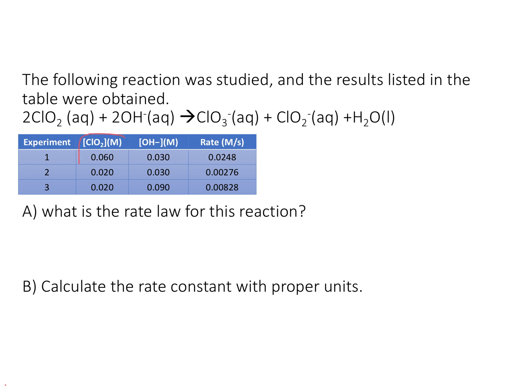To find the rate with respect to chlorine dioxide, I want to use experiments 1 and 2, because the hydroxide concentration stays the same. Then to find the rate with respect to hydroxide, I want to use experiments 3 and 4, because in those experiments the hydroxide concentration changes and the chlorine dioxide concentration stays the same.